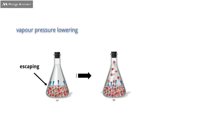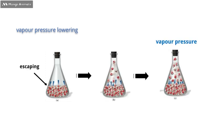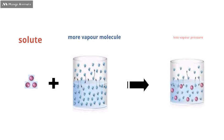Vapor pressure lowering. Some of the liquid molecules escape from the surface, causing pressure called vapor pressure. When we add solute molecules, it causes less liquid molecules to escape, which in turn causes less vapor pressure.